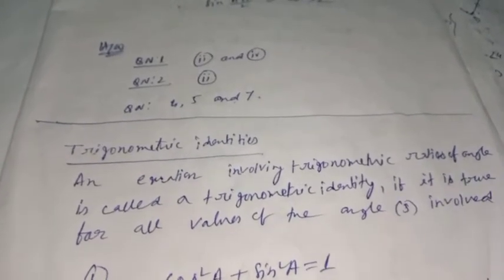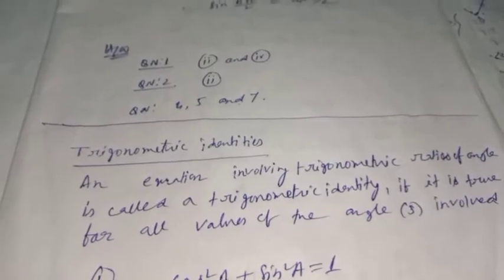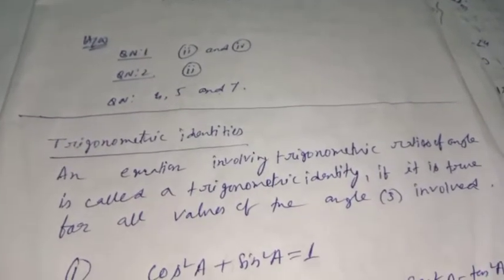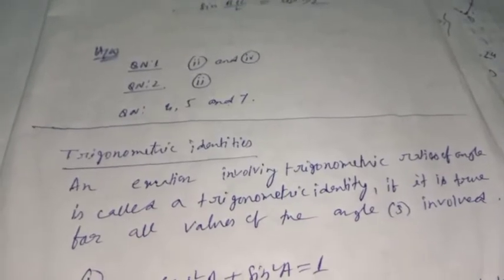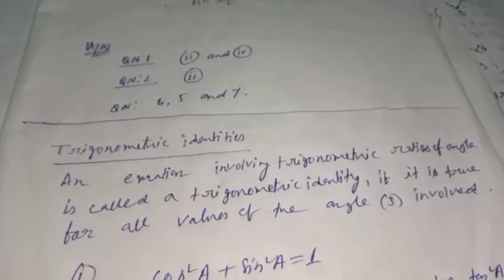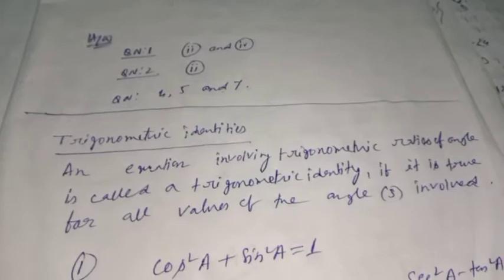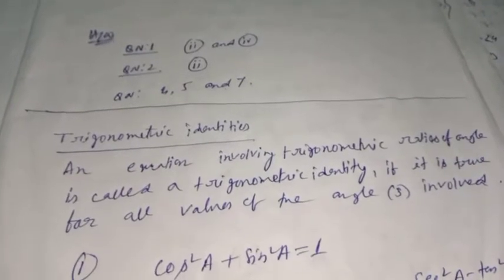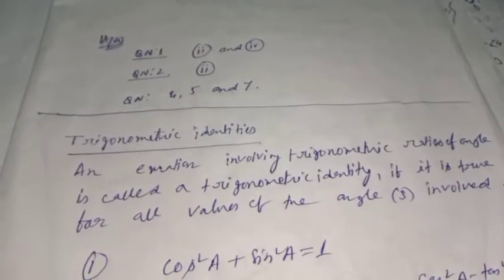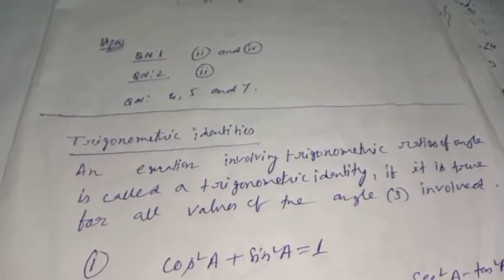Before studying this topic, let me recall what we covered in our previous class. We learned about trigonometric ratios of complementary angles and six new formulas: sin(90° - θ) = cos θ, cos(90° - θ) = sin θ, tan(90° - θ) = cot θ, cot(90° - θ) = tan θ, sec(90° - θ) = cosec θ, and cosec(90° - θ) = sec θ.